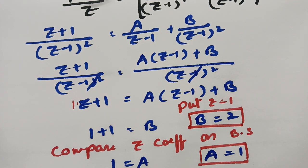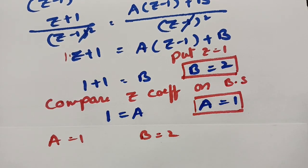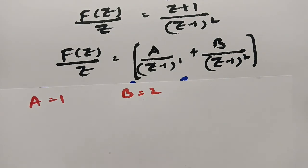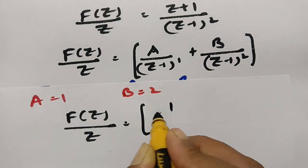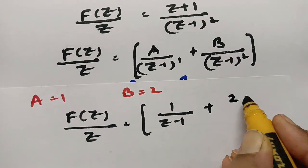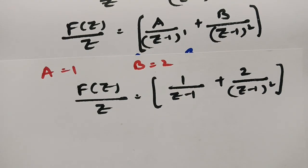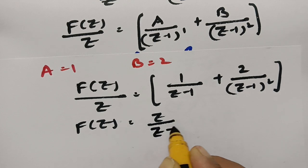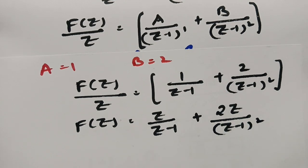After getting A equal to 1 and B equal to 2, I substitute these values back into the partial fractions. So F(Z) / Z equals 1 / (Z - 1) + 2 / (Z - 1)². Sending Z to the other side, F(Z) equals Z / (Z - 1) + 2Z / (Z - 1)².